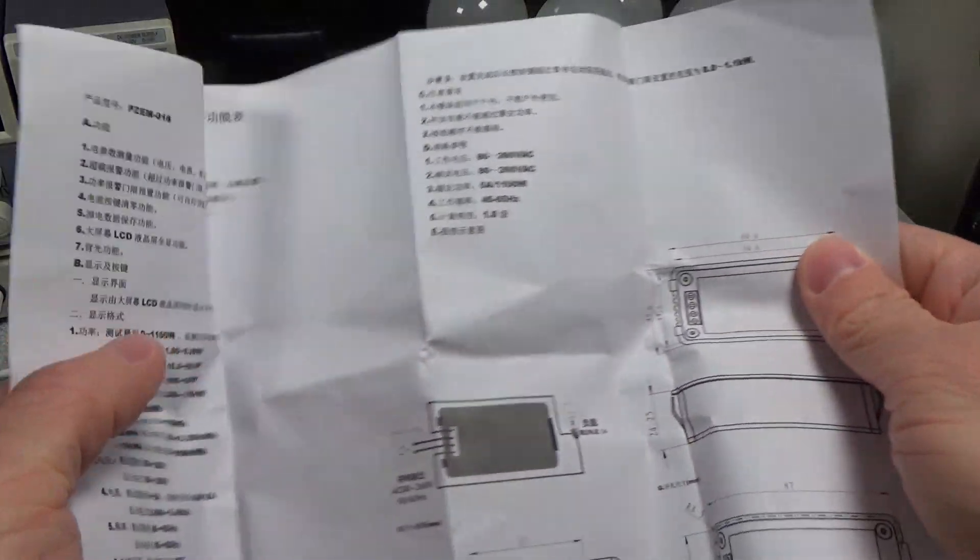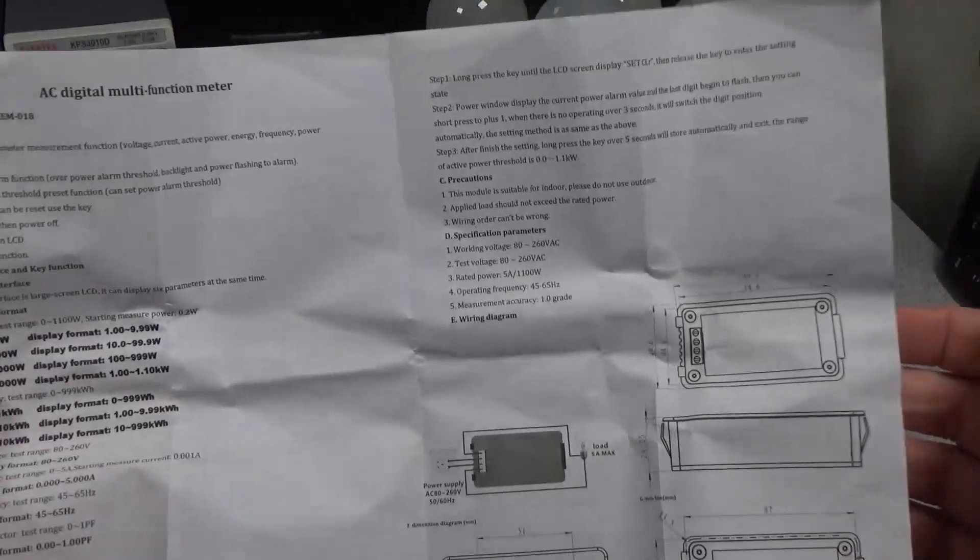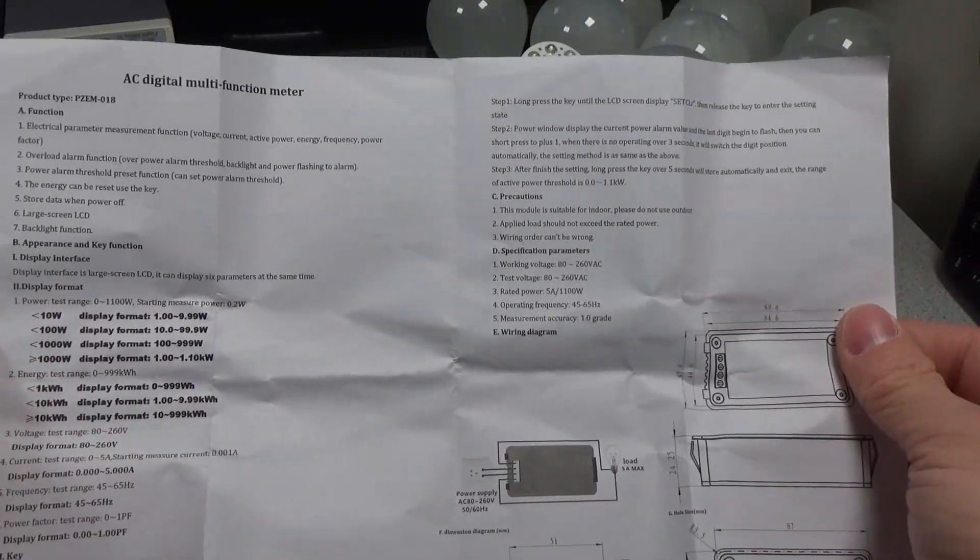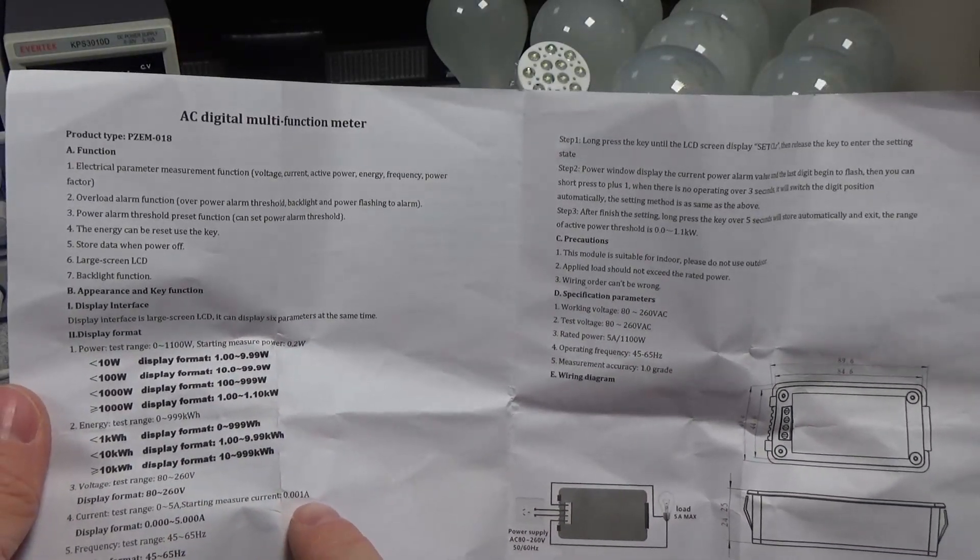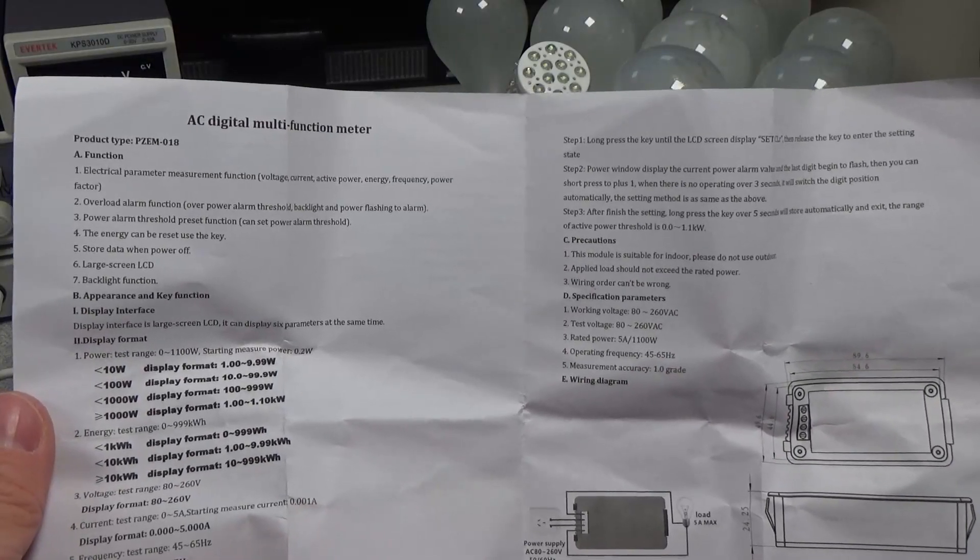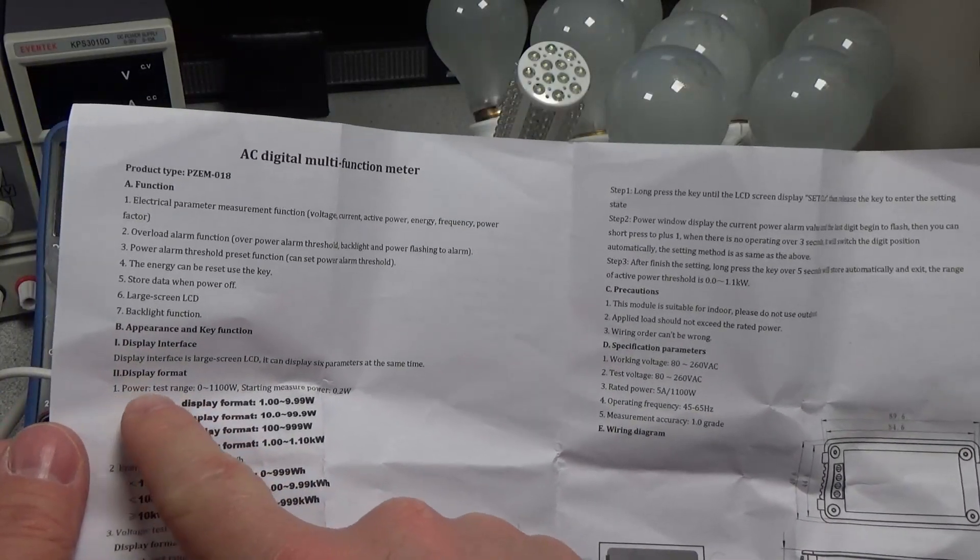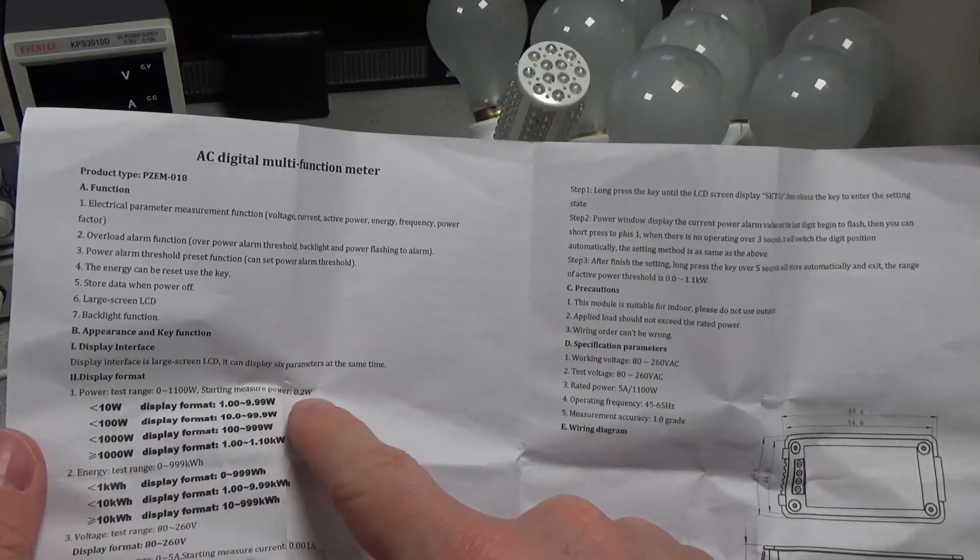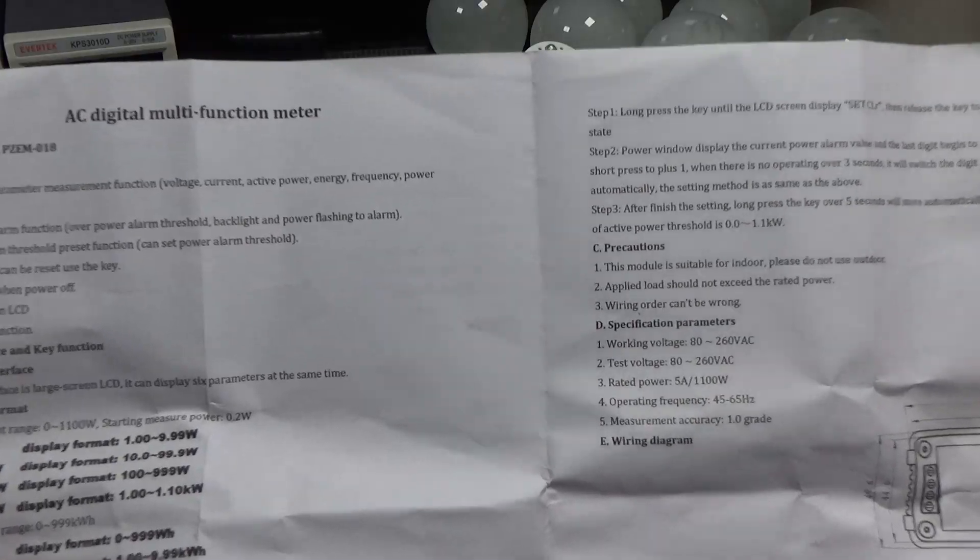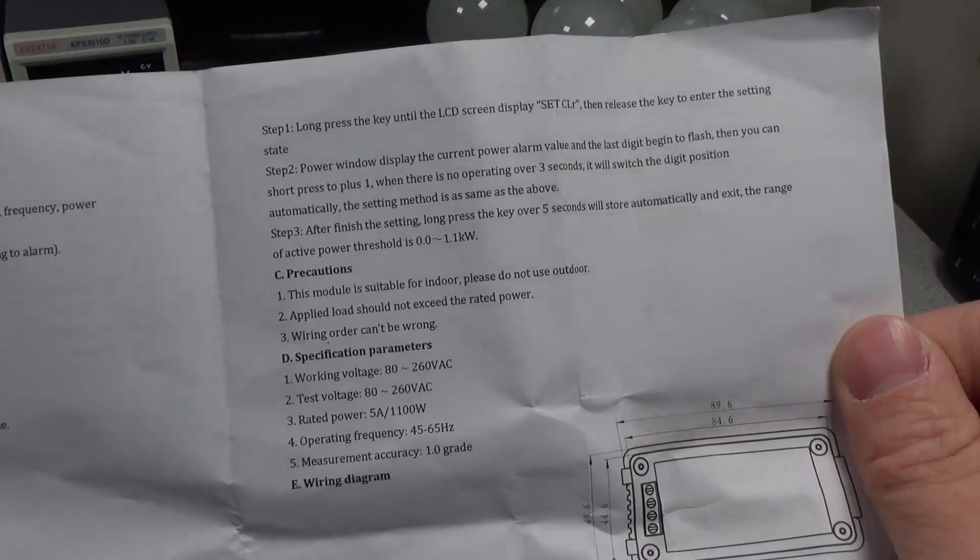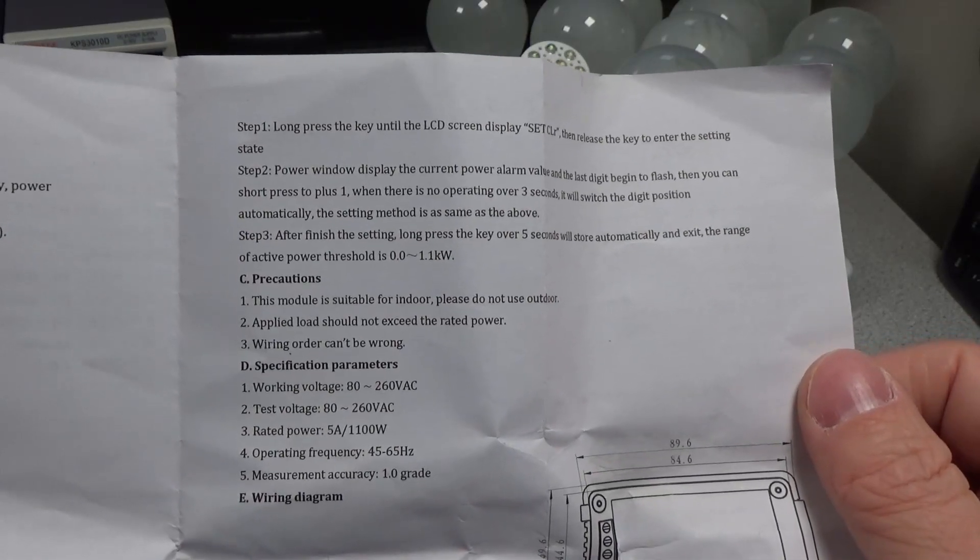Hopefully with that 5 amp range, it'll give us a little bit more accuracy. Let's take a look at our data sheet here. We have our different ranges, it says it starts measuring current at 0.001 amps, which is 1 milliamp, which is good. Should be able to see something then. And start measuring power at 0.2 watts, so that's probably going to be a problem, that's probably too low to get anything useful out of it.